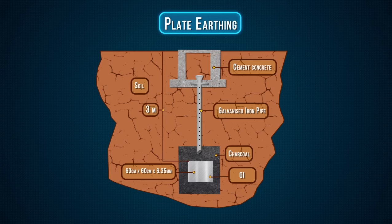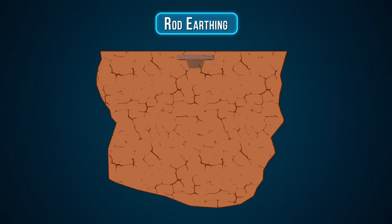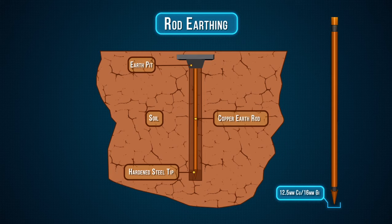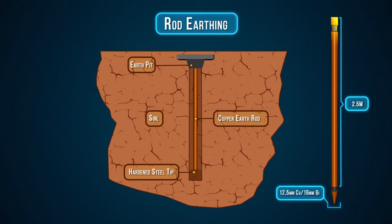Rod earthing. Look at this design for details. A copper rod of 12.5 mm or 16 mm diameter, or galvanized steel of length above 2.5 m, are buried upright in the earth manually or using a pneumatic hammer. The length of embedded electrodes in the soil reduces earth resistance to a desired value.